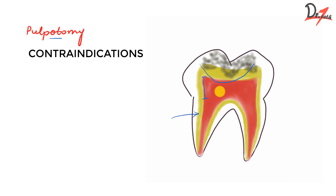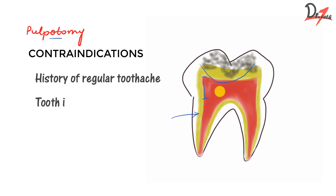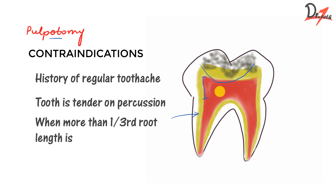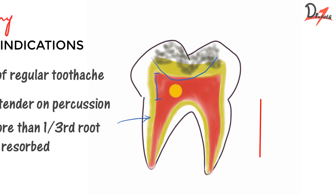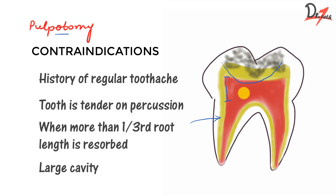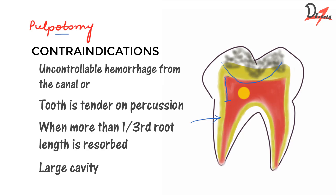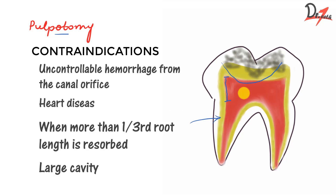Contraindications of pulpotomy: when the patient has regular toothache, when tenderness on percussion is present, and root resorption is an important factor — when more than one-third of root length is resorbed, pulpotomy is contraindicated. But when at least two-thirds of root length is present, that is an indication for pulpotomy. Pulpotomy is also contraindicated in large cavities, when there is uncontrollable hemorrhage from the canal orifices, and in some medical conditions like heart disease or immunocompromised patients.